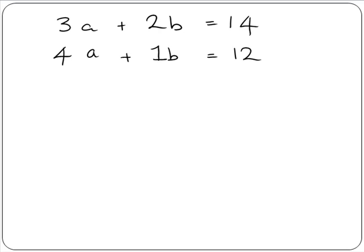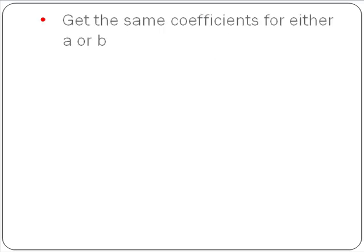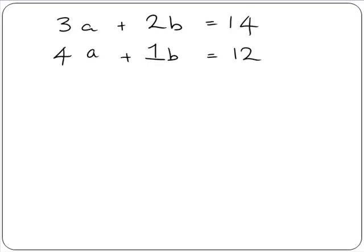Again, our first step is to get the same coefficients for either a or b. In this case, we can get the same b coefficient if we multiply the second equation by 2. Remember, if we're multiplying the b by 2, we need to multiply the whole equation by 2. So 2 times 4a gives us 8a, 2 times 1b gives us 2b, and 2 times 12 gives us 24.